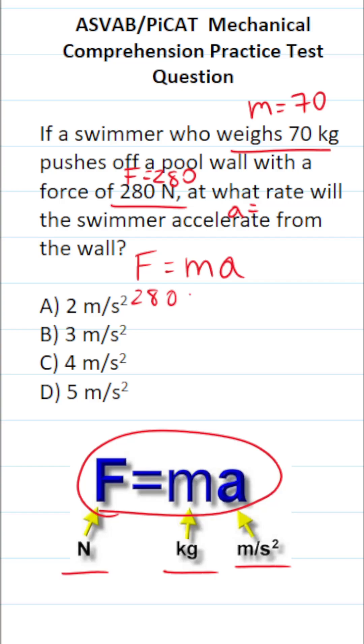So this is 280 equals 70 times A. To solve for A, all we have to do is divide both sides of this equation by 70. In doing so, this crosses out, leaving you with A over here. Cross out these corresponding zeros. 28 divided by 7 is 4.